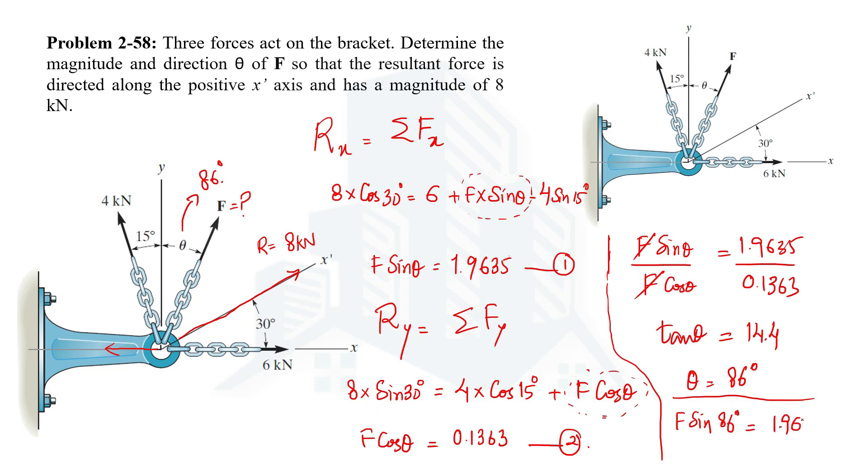Now in this equation only F is unknown. So on simplification we are going to get the value of 1.97 kilonewton as the magnitude of force F.